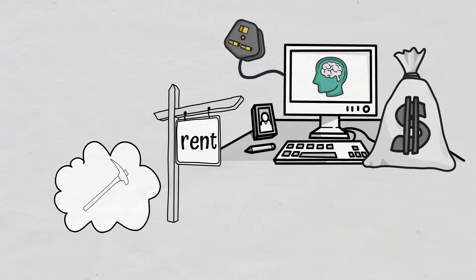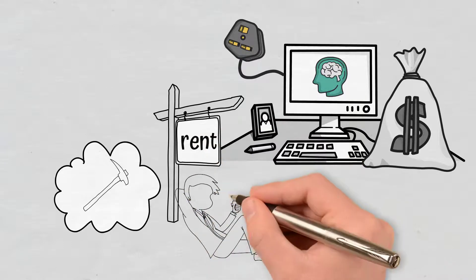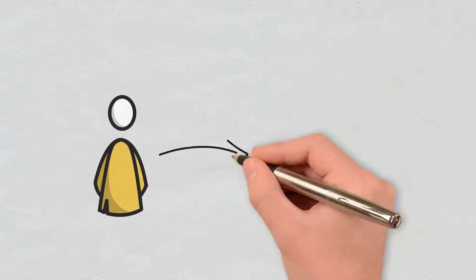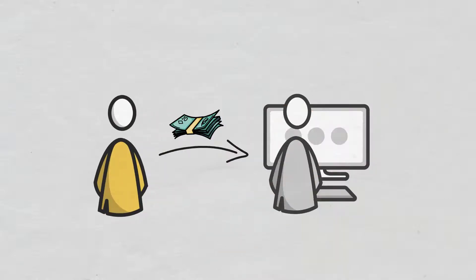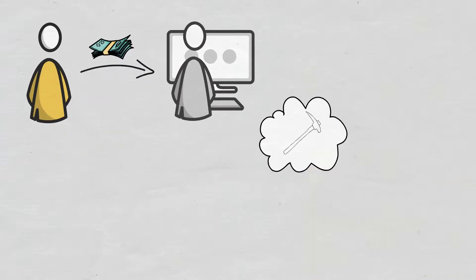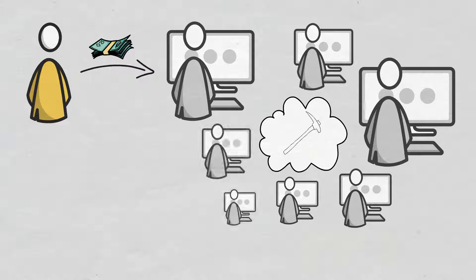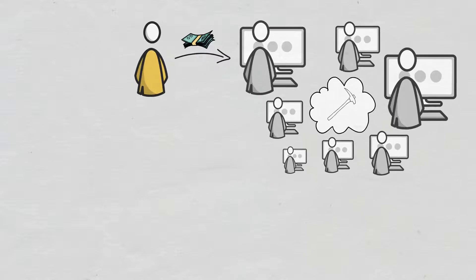So, cloud mining is a mechanism used to mine cryptocurrency that lets people participate in mining remotely without them having to actually install and run the hardware and related software. Basically, users pay third parties to do the work for them. A cloud mining provider owns and operates a mining farm or facility that hosts and runs mining rigs.